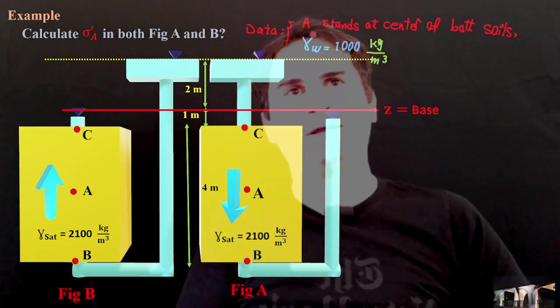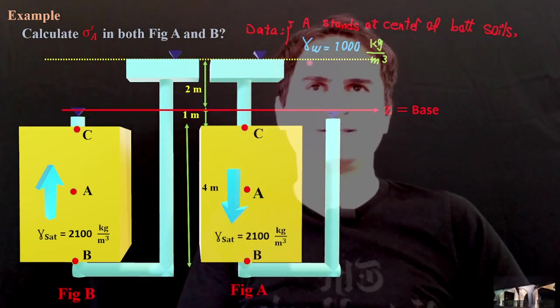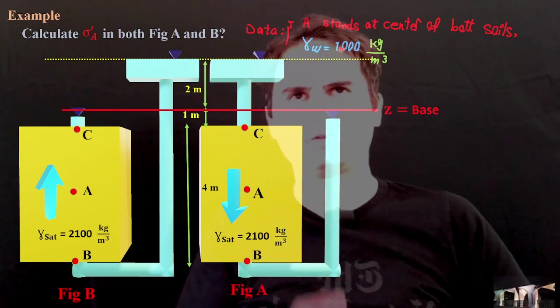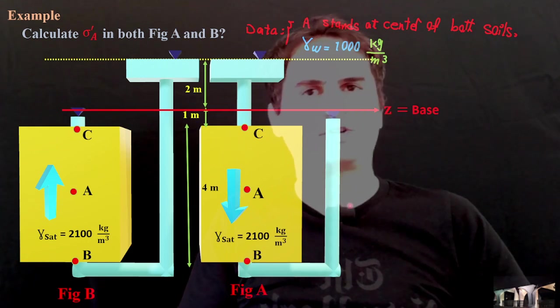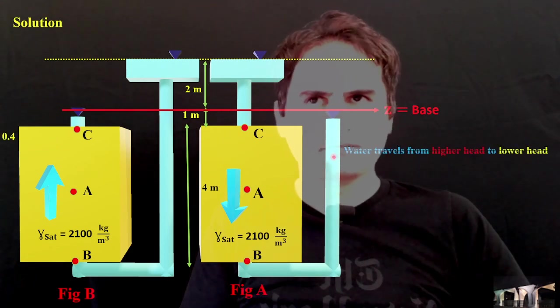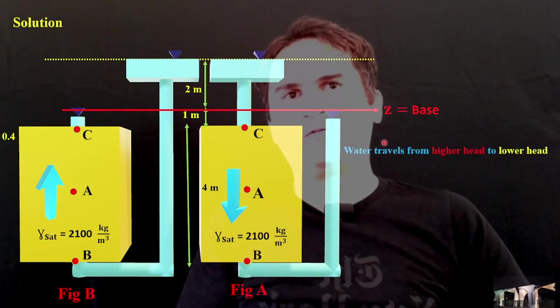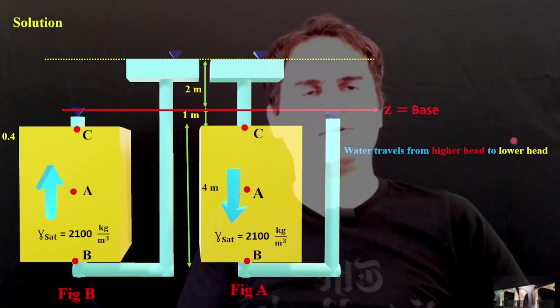We also know A stands at the center of both soils, and gamma for water is 1,000 kilogram per meter cube. We do know water travels from higher head to lower head.